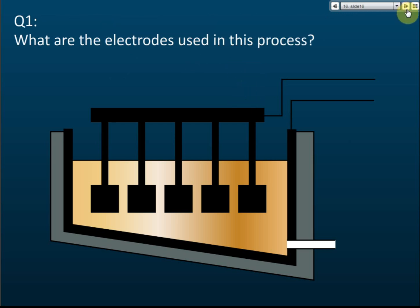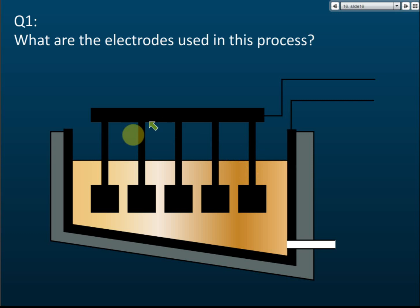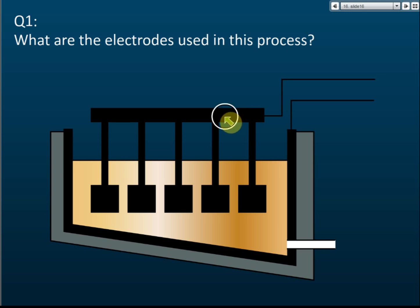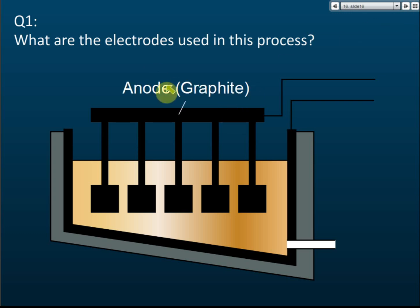The first thing we need to know is the electrodes used in this process. The black ones shown here are the electrodes — we have two electrodes, one on each side. The material used for the electrodes is carbon or graphite. Both the anode and the cathode use graphite.